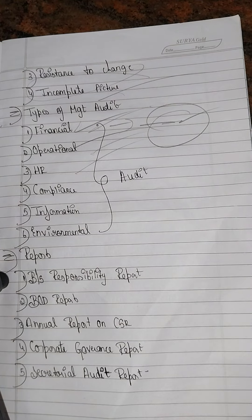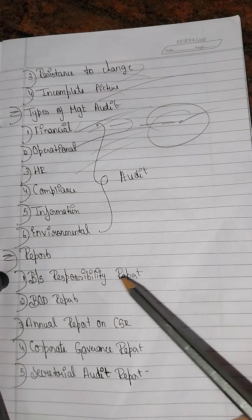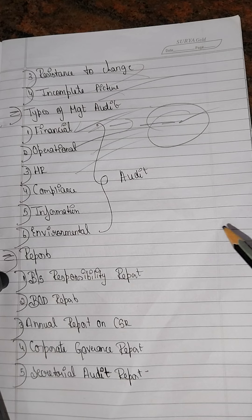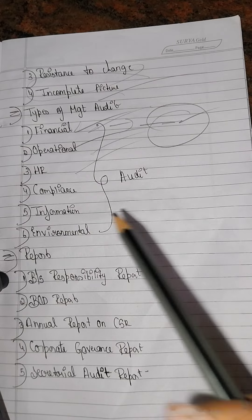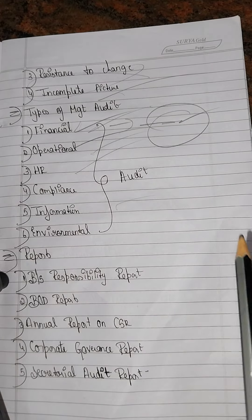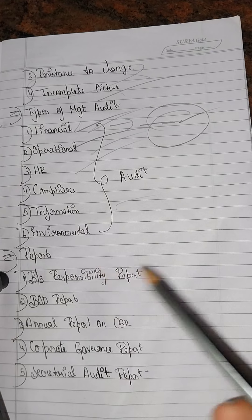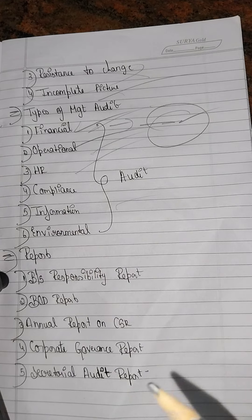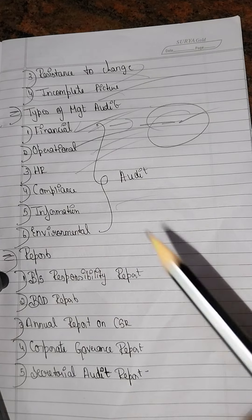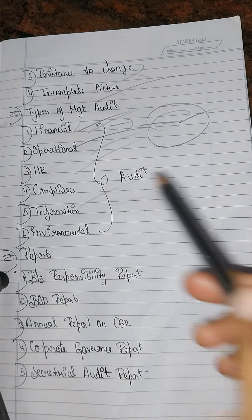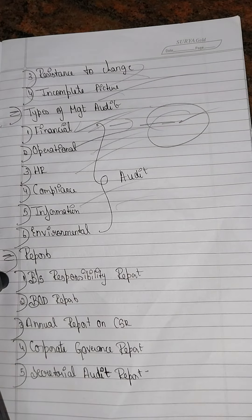Next is an HR audit, which covers training processes, company promotional activities, and employee activities — checking whether employees are increasing or decreasing. Next is a compliance audit, which ensures the company and employees follow rules and regulations. Then there is an information audit, which ensures proper information is recorded.